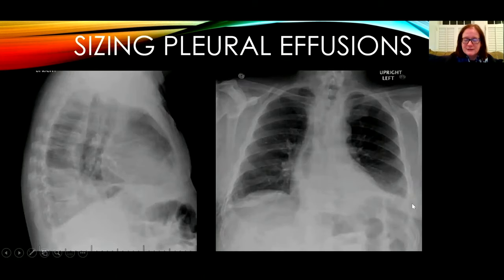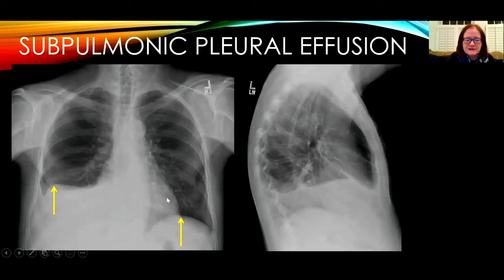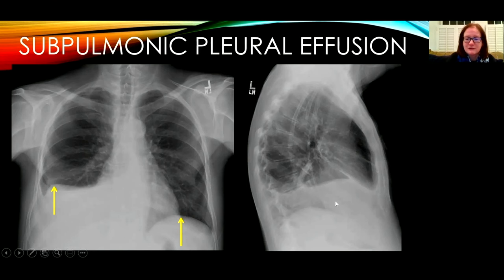When sizing pleural effusions, this patient has a small left pleural effusion on the frontal view, but on the lateral view there is quite a sizeable effusion. It's possible to hide 250 to 300 mL in the costophrenic recess before it becomes visible on the frontal view. This patient has a subpulmonic pleural effusion with fluid underneath the right lung. This can simulate an elevated hemidiaphragm, but the dome of the apparent hemidiaphragm is displaced more laterally, with a gradual medial slope and a sharper lateral slope. The subpulmonic pleural effusion can also be seen on the lateral view below the lung.